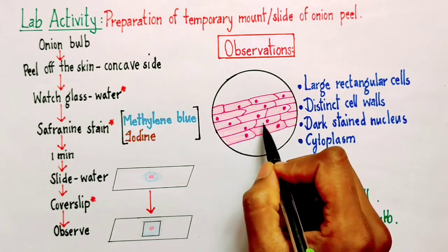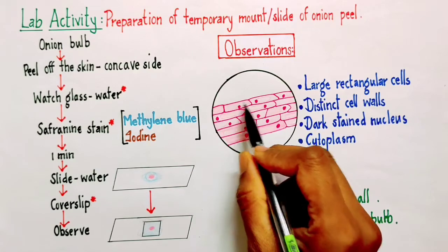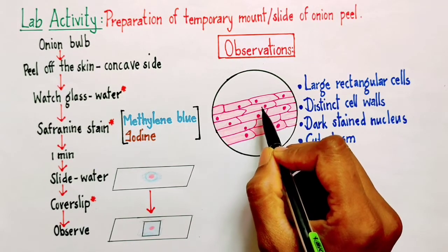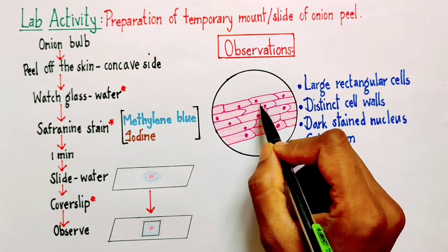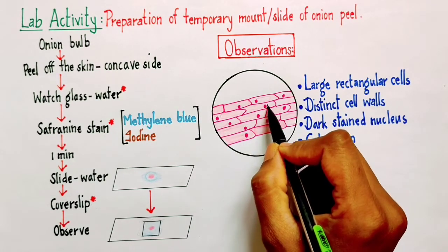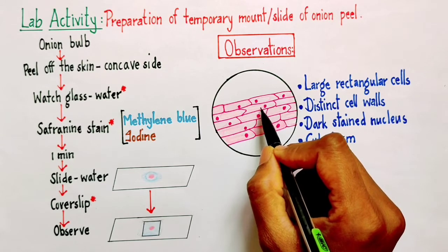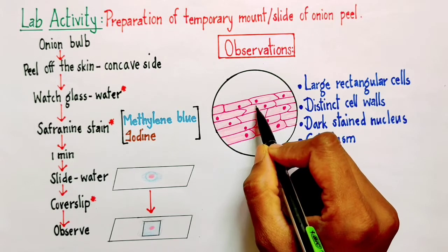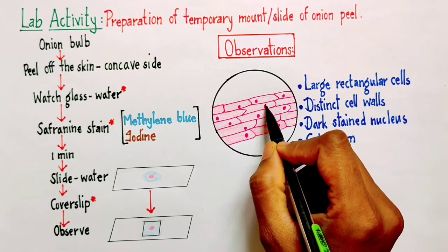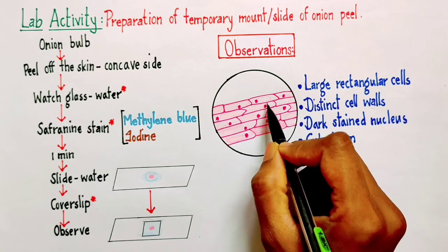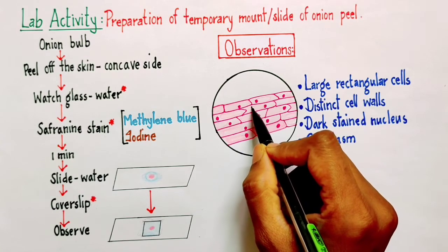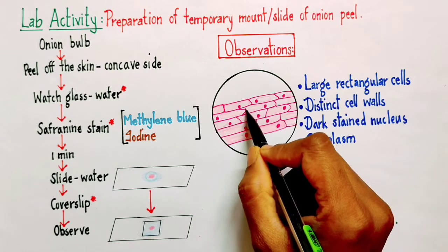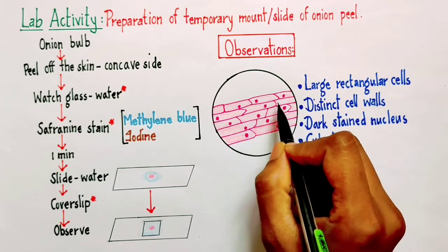If you carefully observe in each of these cells, the nucleus is not at the center. Why? The reason is that in plant cells, generally there is a big vacuole and that vacuole is going to push the nucleus towards the side. Basically, this is the nucleus and next to it we will have a big vacuole, and all around is your cytoplasm.